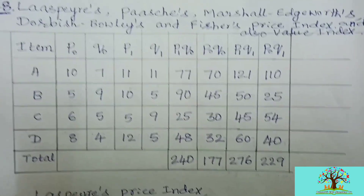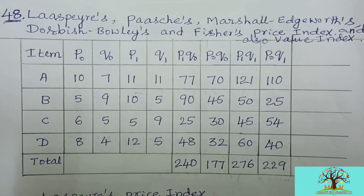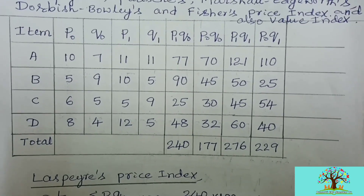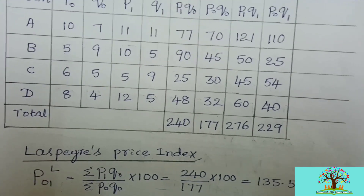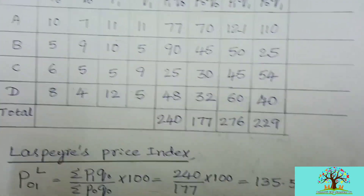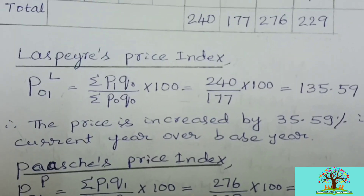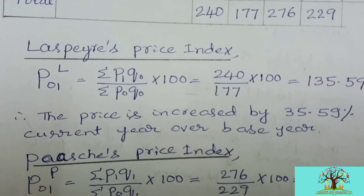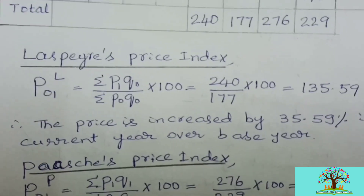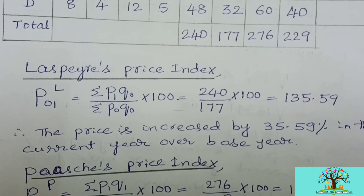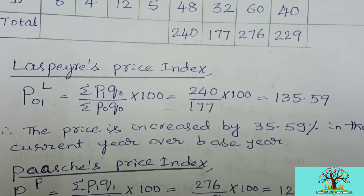In this particular question the paper asks only three index numbers, but I am showing how to calculate all price index numbers and one quantity index number. Let us first calculate Laspeyre's price index number. The formula is: P01(L) = summation p1·q-naught divided by summation p-naught·q-naught, multiplied by 100. That equals 240 divided by 177, multiplied by 100, which gives us 135.59.